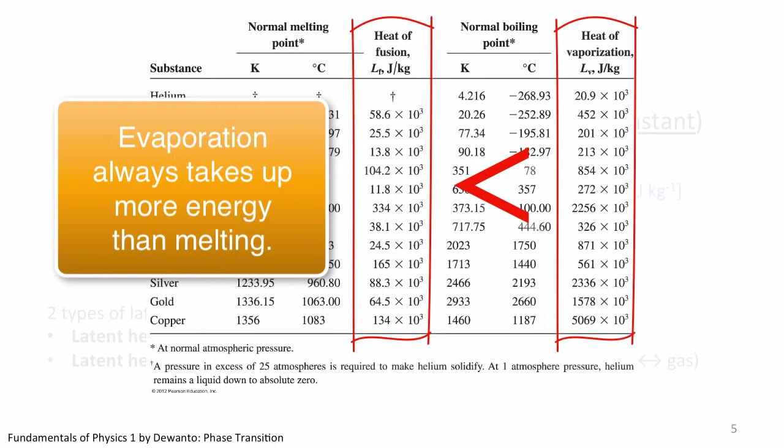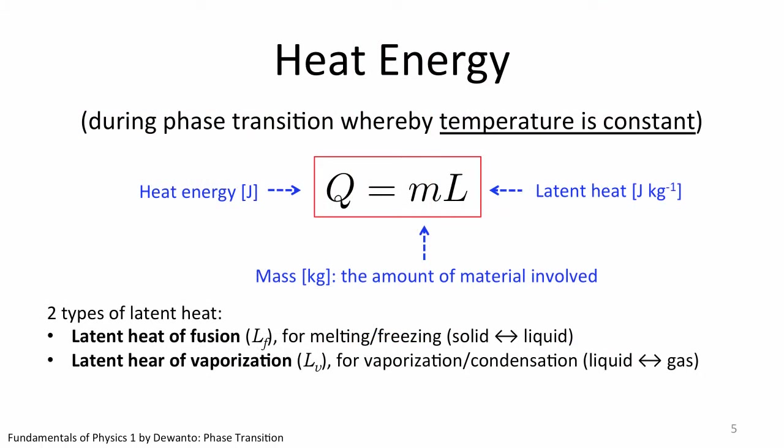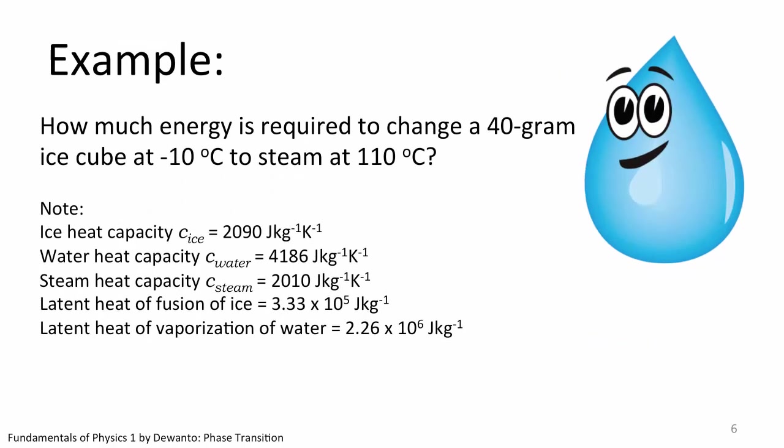Now I will close this chapter with a simple example of how this equation can be applied to solve problems. The problem is, how much energy is required to change a 40 gram ice cube at minus 10 degrees Celsius to steam at 110 degrees Celsius. The necessary heat capacities and latent heat are provided here. By the way, you do not need to memorize any of these constants. This will be provided in the test or exam. I will give you some time to solve this problem.